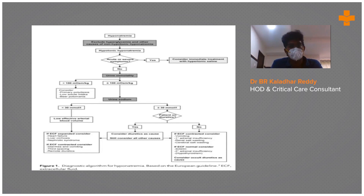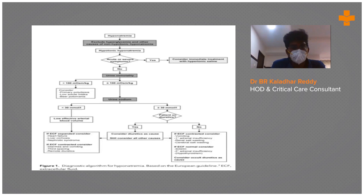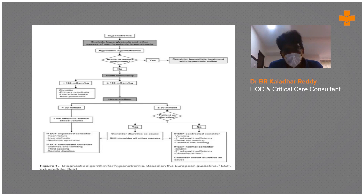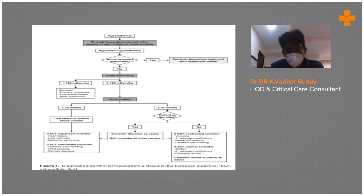After ruling out hypertonic causes, move to hypotonic hyponatremia. If the patient is hyponatremic and hypotonic with severe symptoms, consider giving hypertonic saline. Always remember: if the patient does not have symptoms, first try to find the cause then go for treatment. Don't rush to give hypertonic saline in an asymptomatic patient.